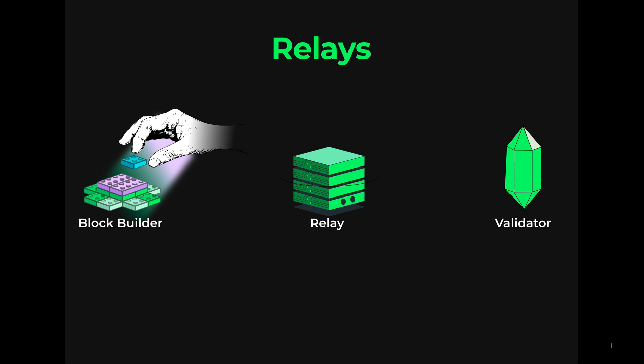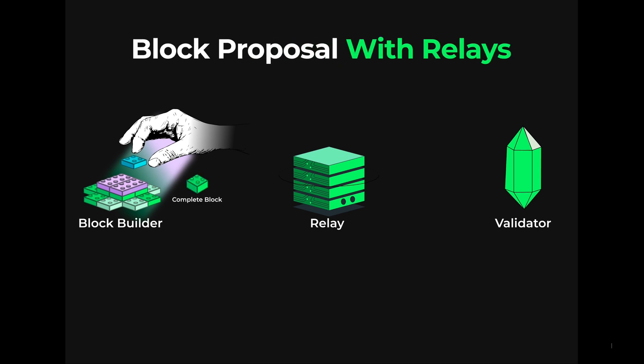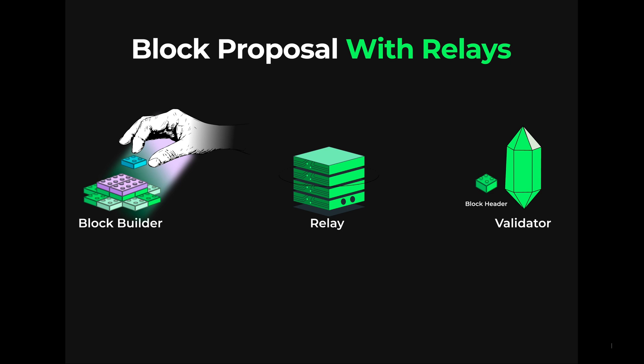Let's walk through how the block proposal process looks when using a relay to understand how it ensures these guarantees. First, block builders send their block bundles to the relay, then the relay chooses the highest tipping block and ensures that the validator gets that tip. Relays connect the block bundle with the validator that has chosen to propose a block, and they provide the validator with just a block header to conceal the block's content. This is done so the validator doesn't try to recreate the block themselves and steal the MEV. The validator key is used to sign off on the block so the block can be proposed.